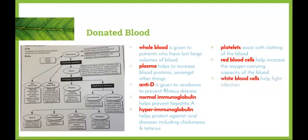White blood cells are able to help fight infection. So again, people with compromised immune systems can be given white blood cells in order to be able to fight infections.